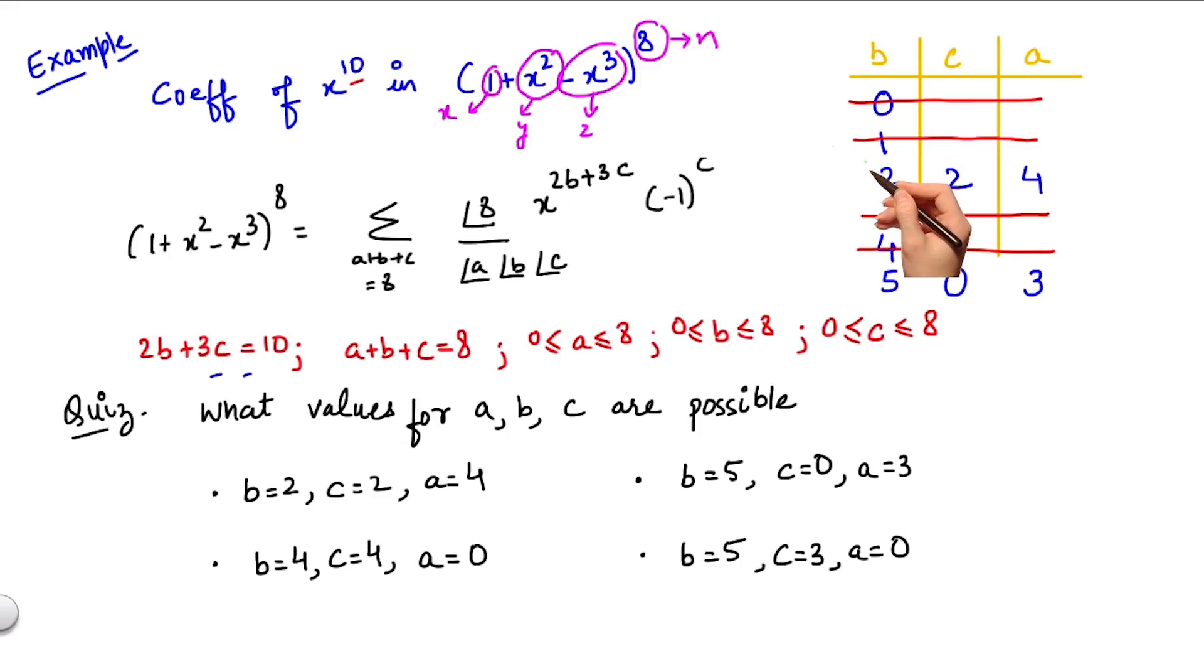First, b, c, and a equal to 2, 2, 4 respectively. And second, b, c, and a equal to 5, 0, 3 respectively. Thus option 1 is correct. Option 3 is correct.